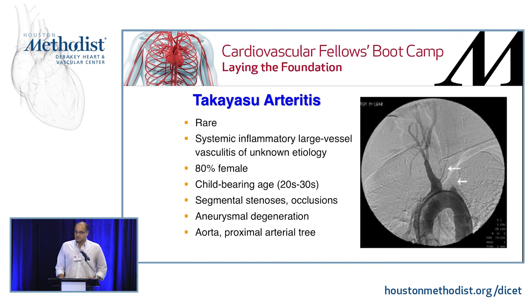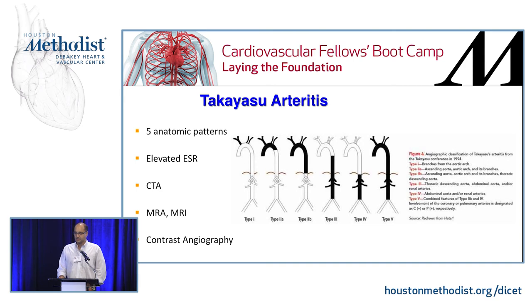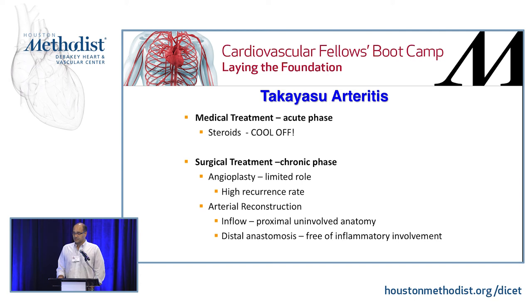Takayasu's arteritis is a systemic inflammatory large-vessel vasculitis affecting 80% female patients, typically young. Symptoms include syncopal attacks, arm claudication, segmental stenosis, occlusions, and aneurysmal degeneration. Always image the aorta given the various types. Treatment is initially medical — let the inflammation cool off before intervening. Angioplasty has virtually no role in Takayasu's and will almost certainly fail. Arterial reconstruction is required, with distal anastomosis placed in disease-free vessel.